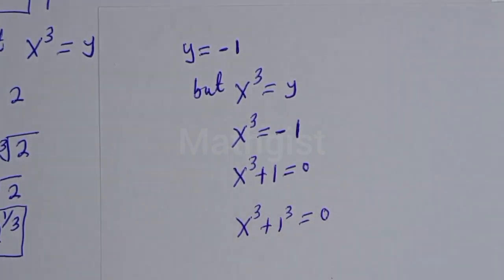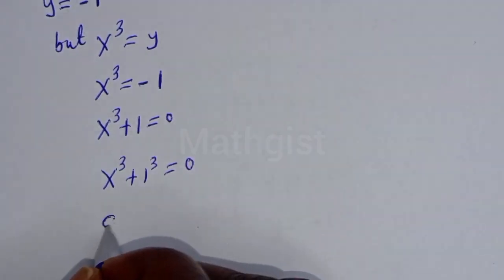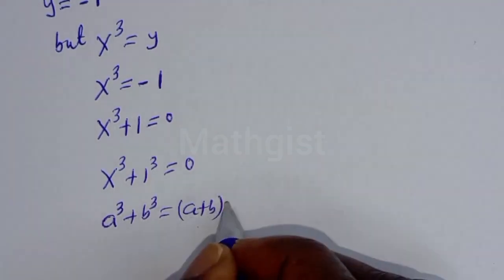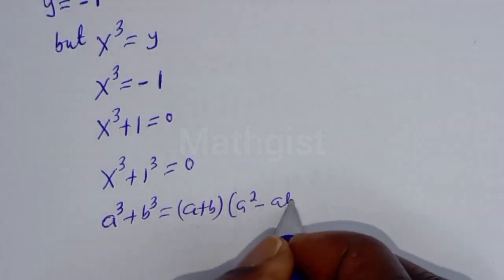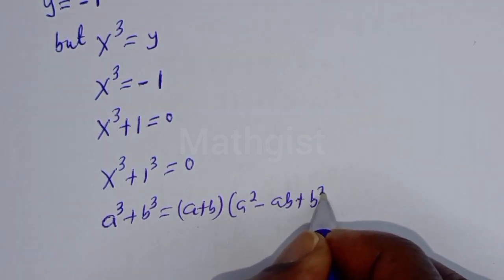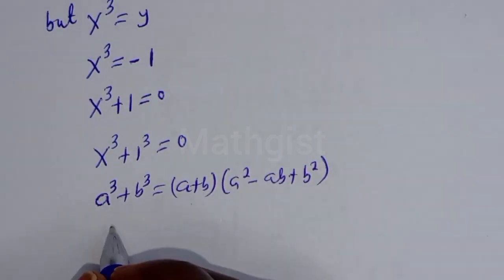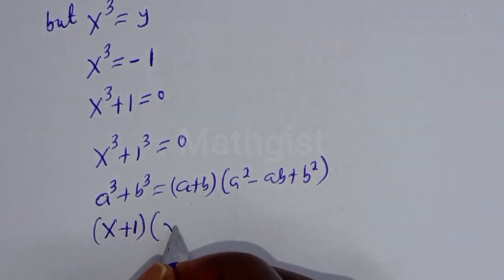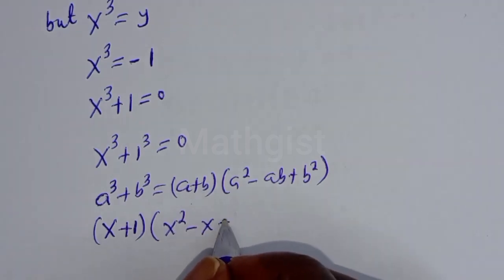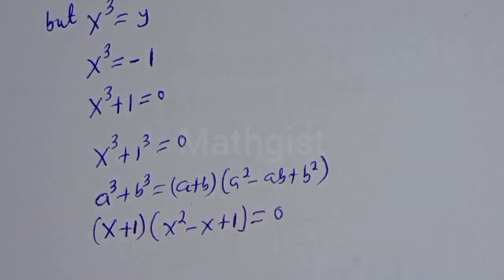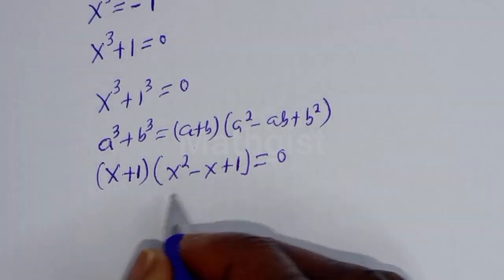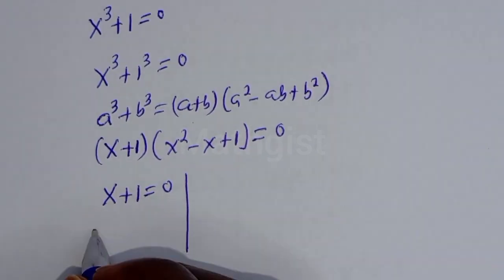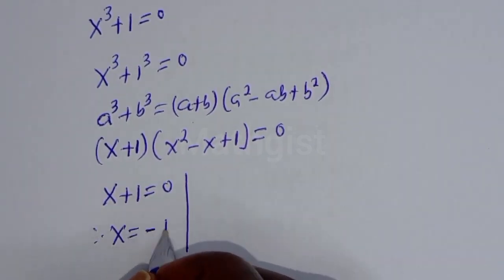Using the sum of cubes rule: a raised to power 3 plus b raised to power 3 equals a plus b times a squared minus ab plus b squared. Applying this, we get s plus 1 bracket s squared minus s plus 1 is equal to 0. There are two cases. The first case is s plus 1 is equal to 0, therefore s is equal to minus 1. Let's call this s2.